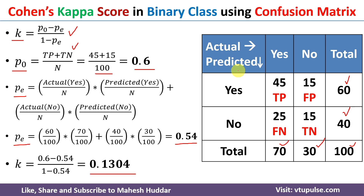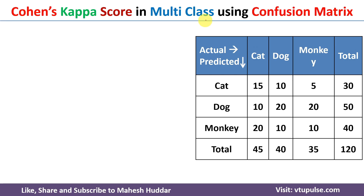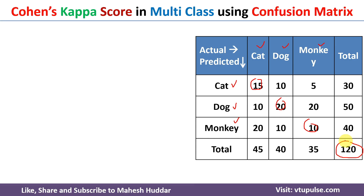Now we will understand how to calculate the Cohen's kappa score for a multiclass classification problem. The confusion matrix given has three classes: cat, dog, and monkey — both as actual and predicted classes. The values 15, 20, and 10 are the correctly predicted examples and the remaining are incorrectly predicted. The total number of examples is 120. We use the same equation to calculate the kappa score.